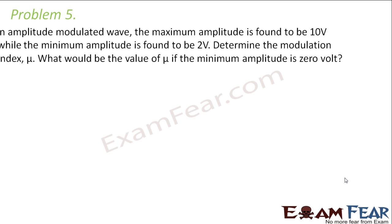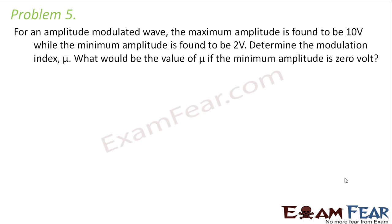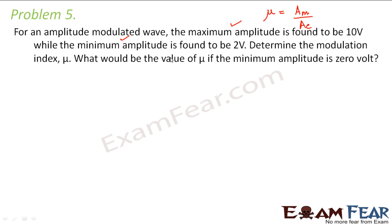Let us look at the last problem of this lesson. For an amplitude modulated wave, the maximum amplitude is found to be 10 volts and the minimum amplitude is found to be 2 volts. Determine the modulation index μ, and what would be the value of μ if the minimum amplitude is 0 volts? We previously defined modulation index as the ratio of the amplitude of the modulating wave to the amplitude of the carrier wave. Now let us see if this has a relationship with the maximum and minimum amplitudes of the modulated wave, since when the wave is modulated the amplitude varies.